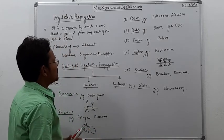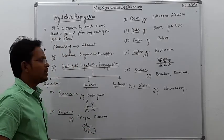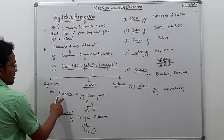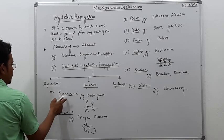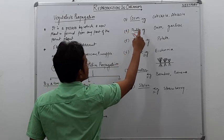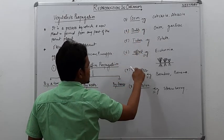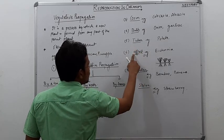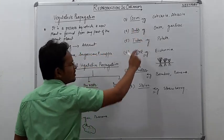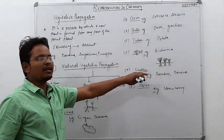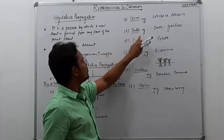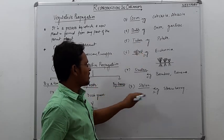Now an important thing is, what is the remembering technique for these seven or eight types? So there's a trick, a way to remember: Rajasthan Royals chose batting after toss. This is the tricky formula you can remember. Runner, rhizome, corm, bulb, tuber, offset, sucker, and stolon.